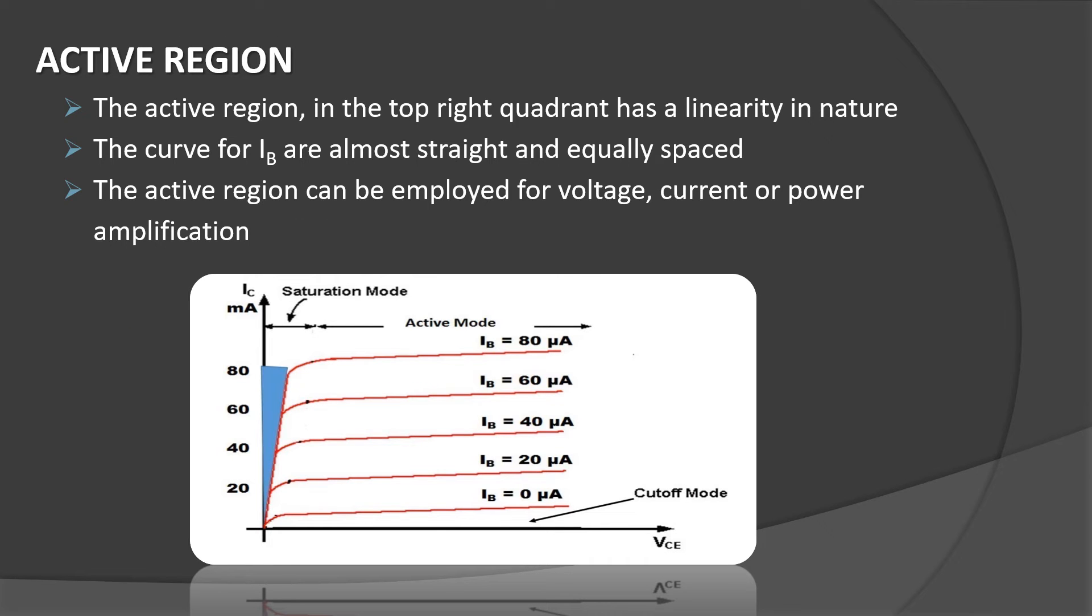There are three major regions in the output characteristics. The first one is the active region. In the topmost right quadrant has a linearity in nature. The curve of base current IEB are almost straight and equally spaced. This can be employed for voltage, current, as well as power amplification.